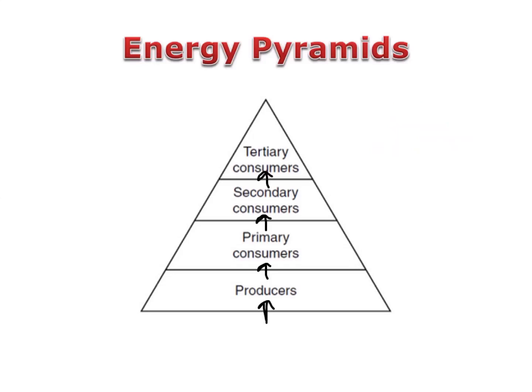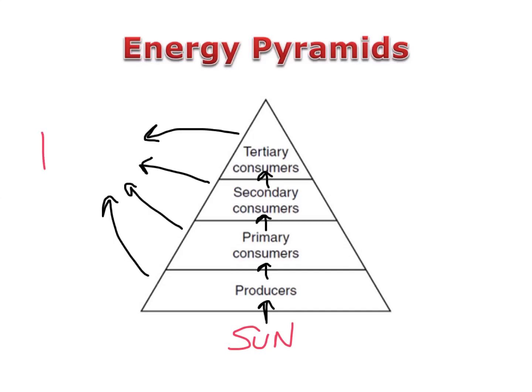Producers get their energy from the sun. The sun provides solar energy, not chemical energy, so it's not considered a trophic level. As energy travels through the food chain, much of the energy is lost to the environment, usually in the form of heat.